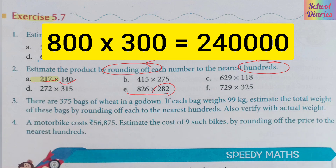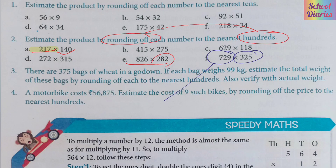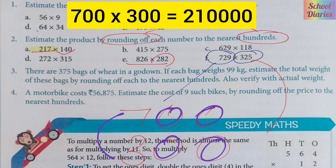Now let's see the next number: 729 multiplied by 325. So 729 will round off to 700 and 325 will round off to 300. Now you multiply 7 by 3, which we know is 21, and then you add the four zeros, giving you 210,000.